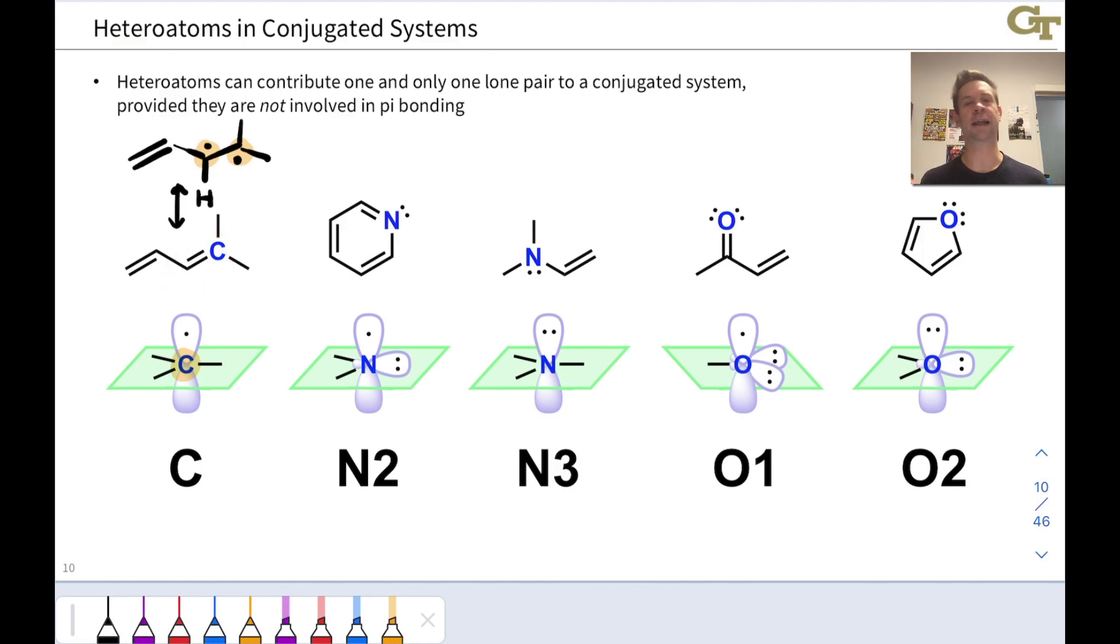Each carbon brings one electron into the mix. So we can think of each carbon as bringing one electron in and we're seeing that one electron in this orbital picture below. That electron is occupying a p orbital and overlap of those adjacent p orbitals creates this pi bond. So we can think about it like the pi bond has two electrons within it or each carbon contributes one pi electron to the conjugated system.